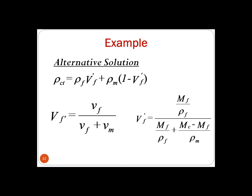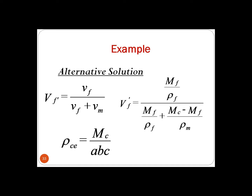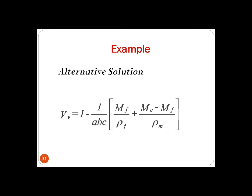These expressions have all been converted into terms with density. Finally, the volume fraction of voids equals 1 minus (1 over ABC) times [MF over rho F plus (MC minus MF) divided by rho M]. All quantities — A, B, C, MF, MC, rho F, rho M — are given, providing an alternate solution to calculate the volume fraction of voids.